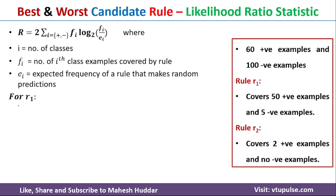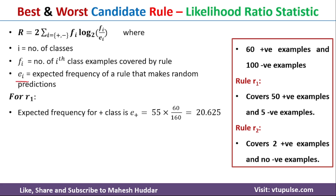First, I will consider rule number one and calculate e(i). The expected frequency for the positive class, e+, is equal to the total number of examples in rule number one — 50 plus 5, so 55 — multiplied by the total number of positive examples, which is 60, divided by the total number of examples, which is 160. Solving this gives e+ equal to 20.625.